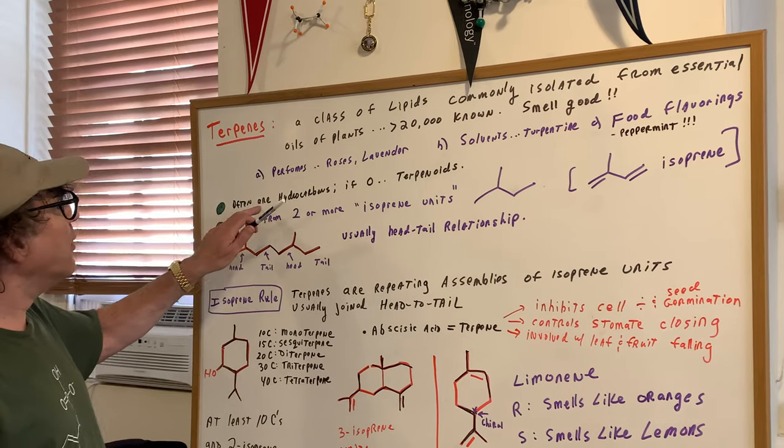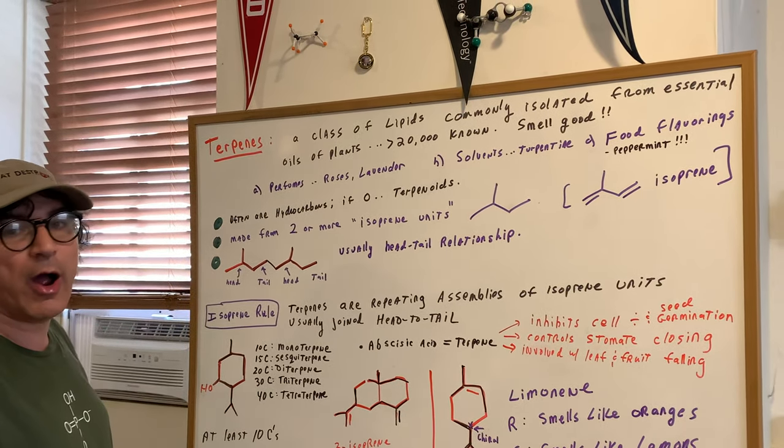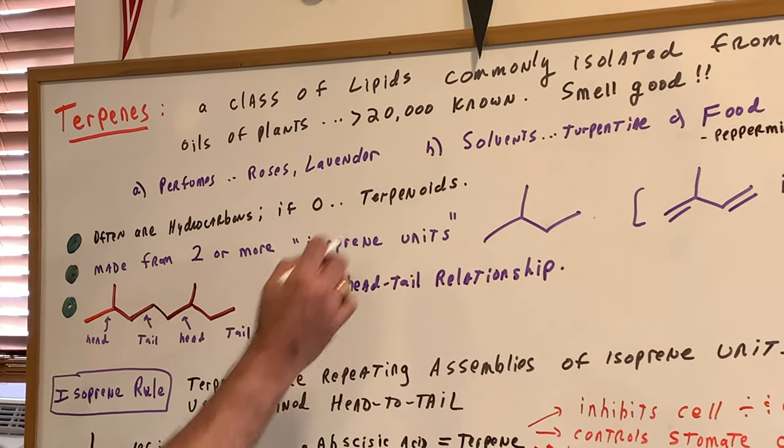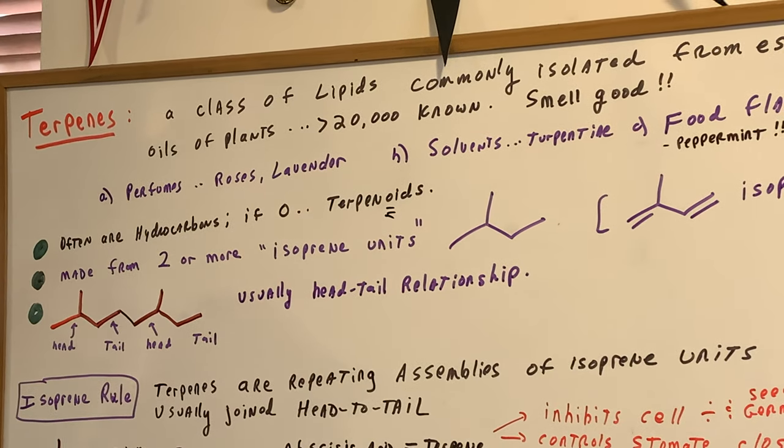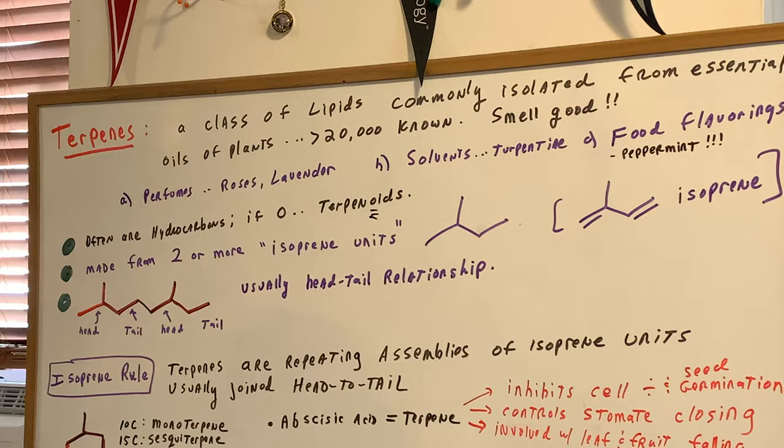Often, and I'll give you some examples in a little while, the terpenes are hydrocarbons, but if there's an O in it, we call it a terpenoid. The way I used to remember it is, you got the O to remind you, so if you have an O in it, terpenoid, if there's no O, we call it a terpene.